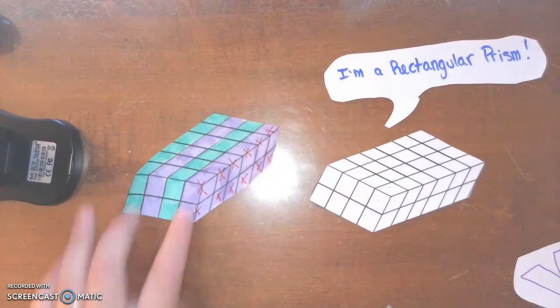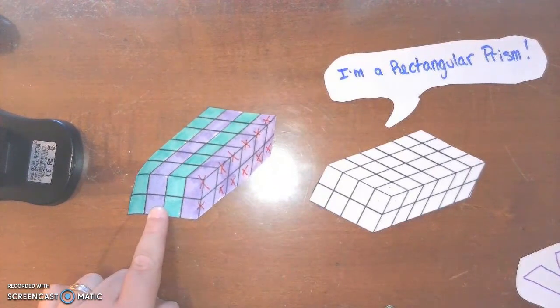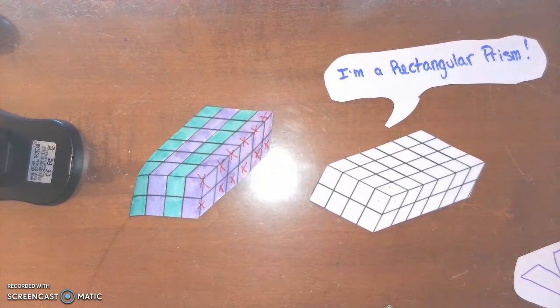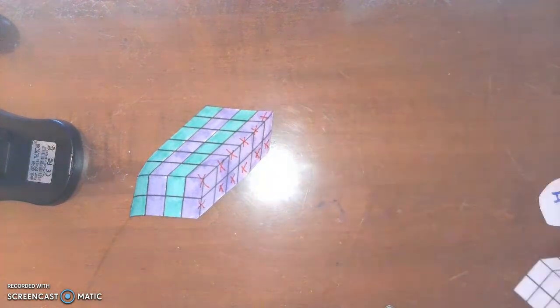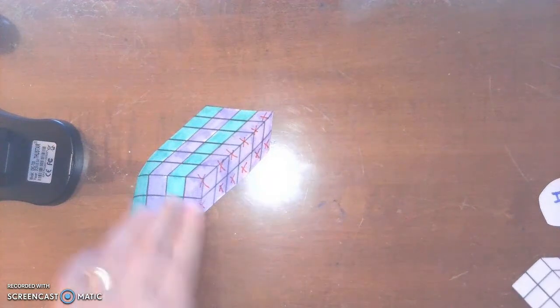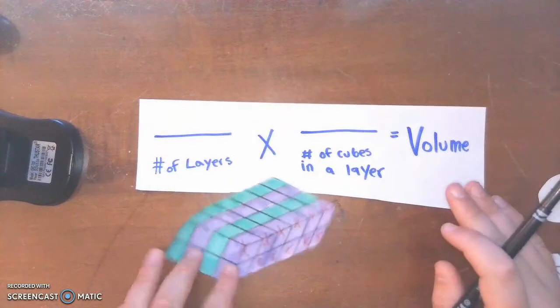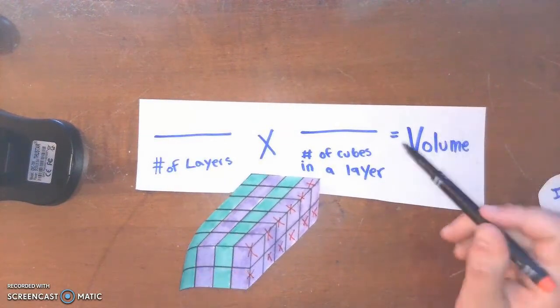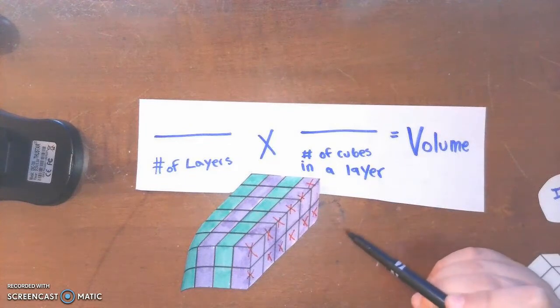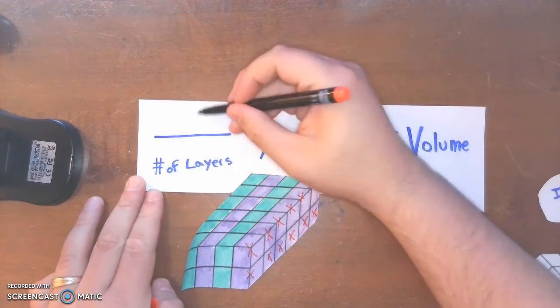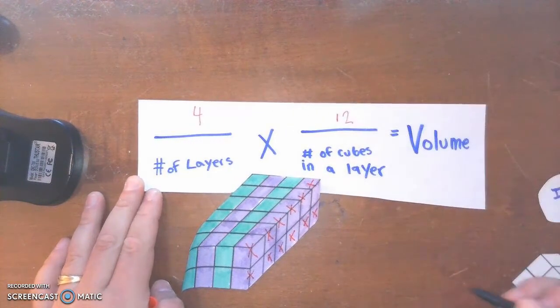Well, if I know that I have four layers and I have twelve cubes in a layer, I can use this simple multiplication expression to figure out the total number of cubes, which is the volume of the rectangular prism. So with four layers and twelve cubes in each layer, I can determine that the volume